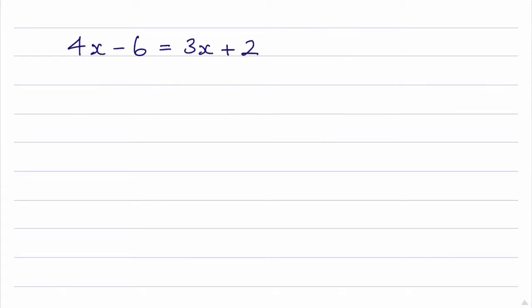In this question we're asked to solve this linear equation. Looking at this, we need to gather the x terms on the left and the numbers on the right. So the first thing I'm going to do is to deal with this 3x term. To do that I need to subtract 3x from the right hand side, and if I do it to the right hand side I must also do it to the left hand side to keep it balanced.